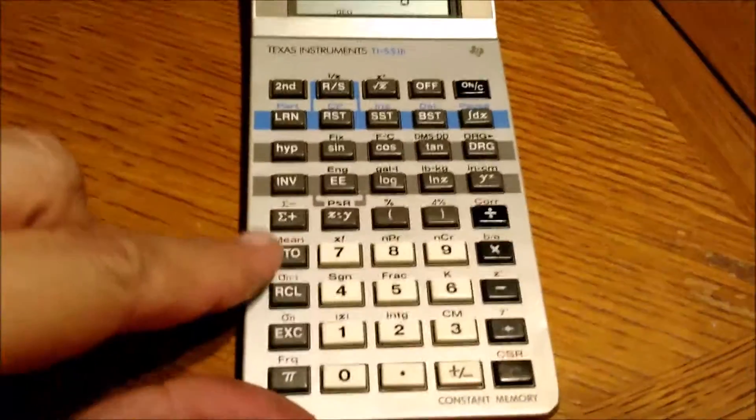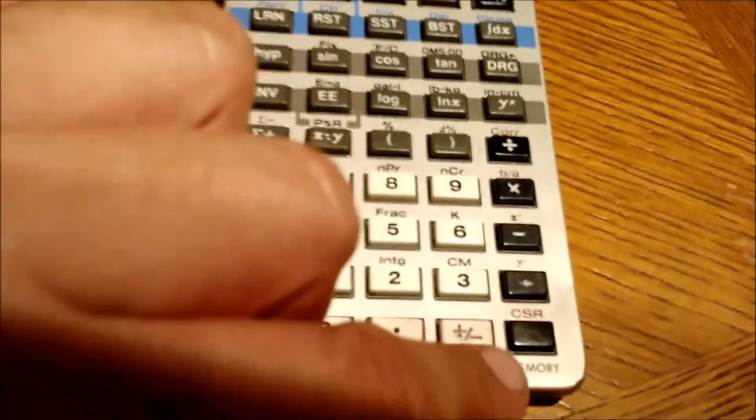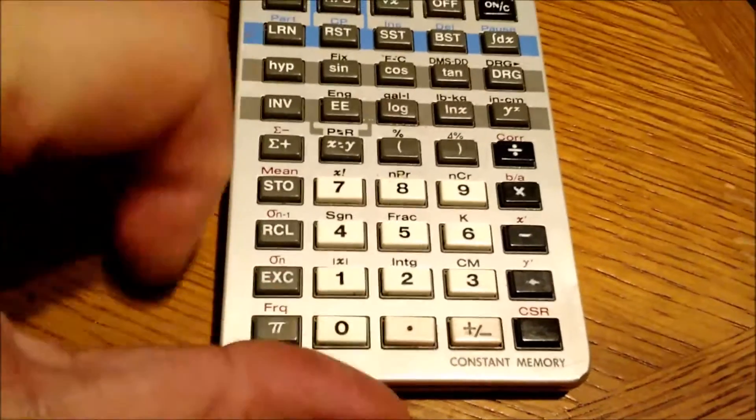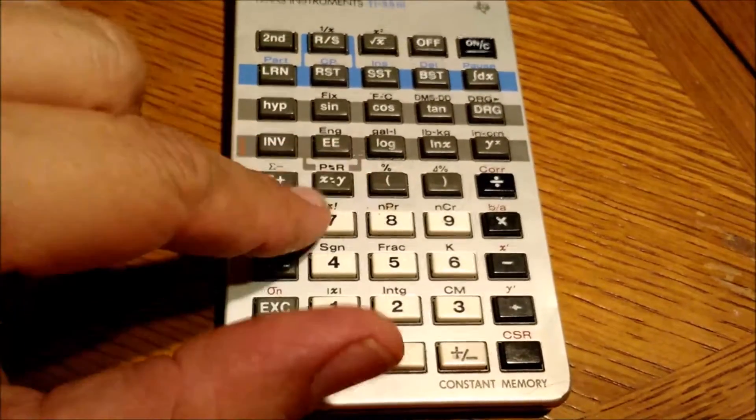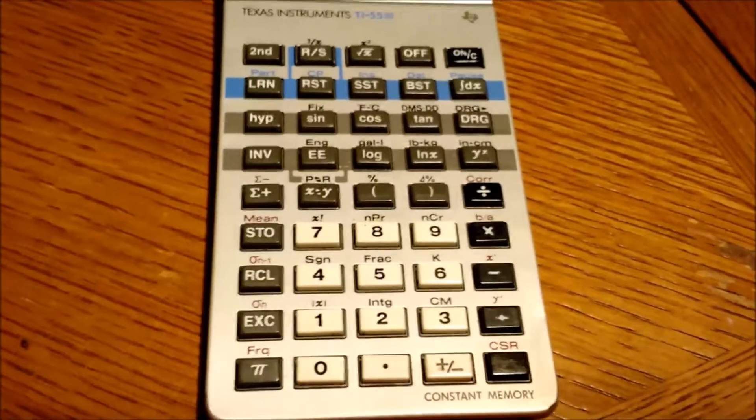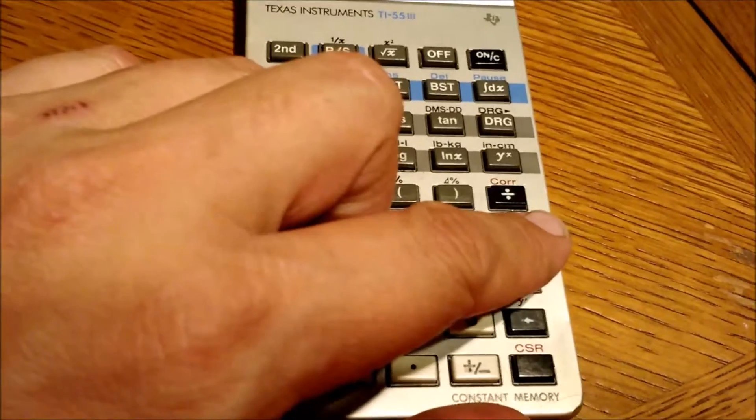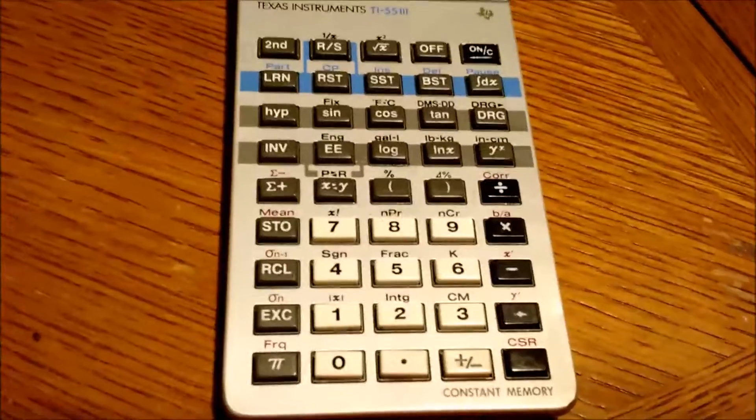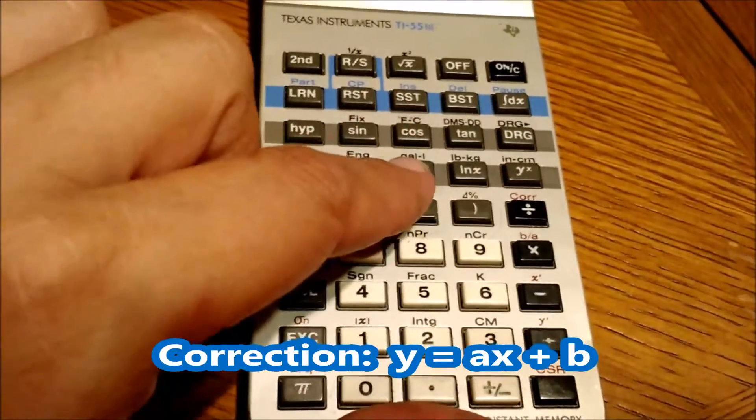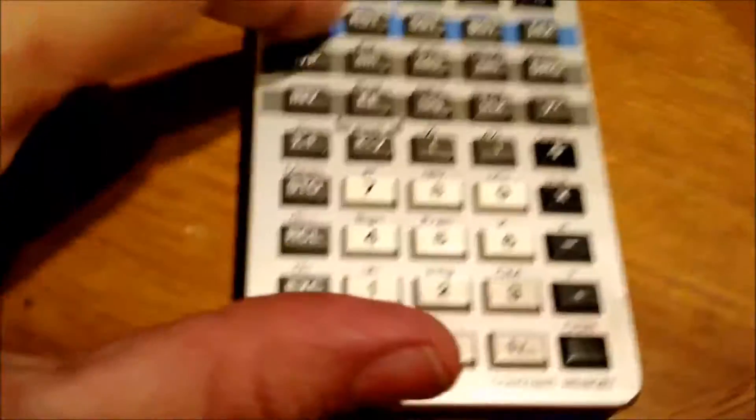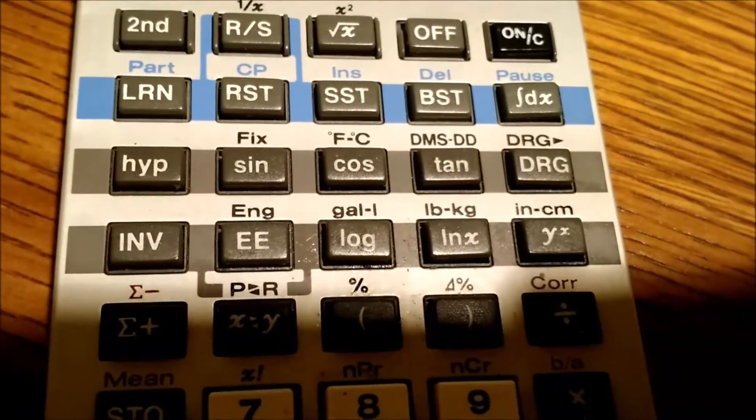As you can see by the red type on the keyboard, the TI-55-3 has linear regression. If you execute mean or the deviations, you just press the exchange key to get x and y. Also, a correlation. I believe this has A plus Bx linear regression in the predictors. You also got some neat conversions. It means gallons to liters, pounds to kilograms, inches to centimeters.